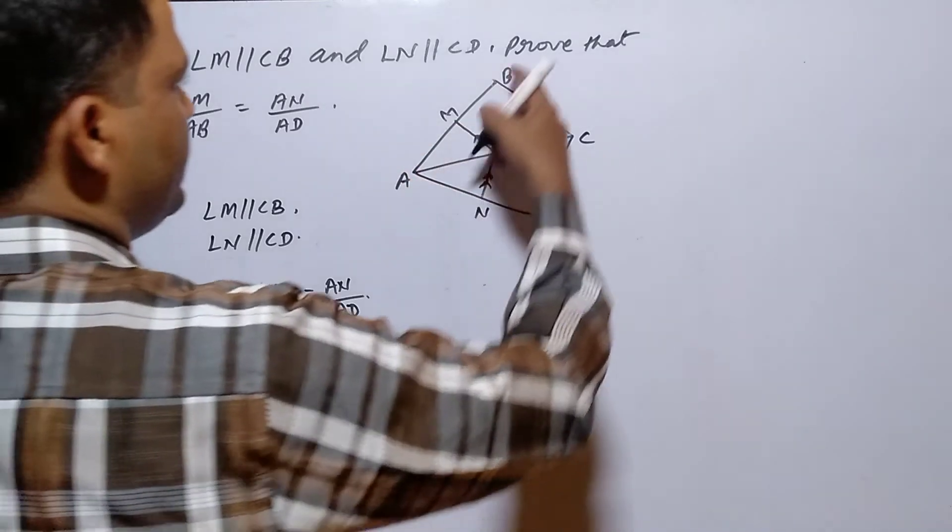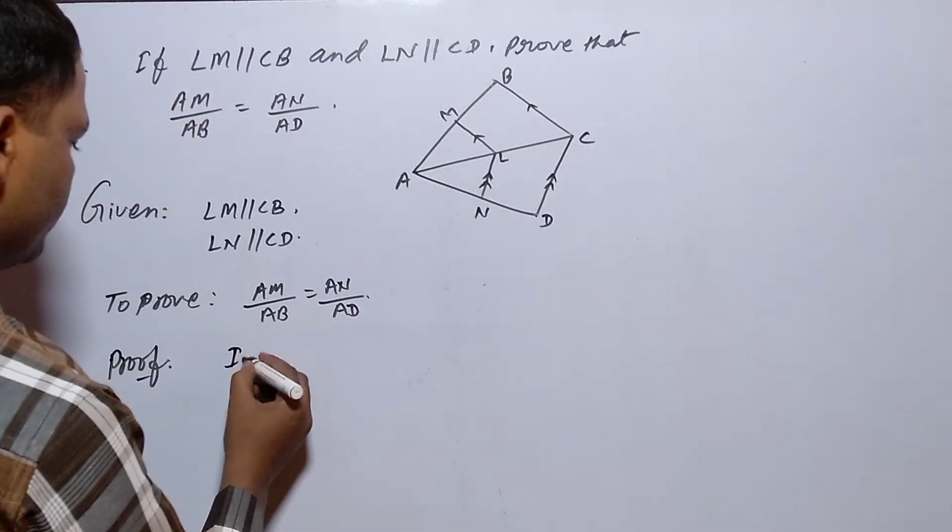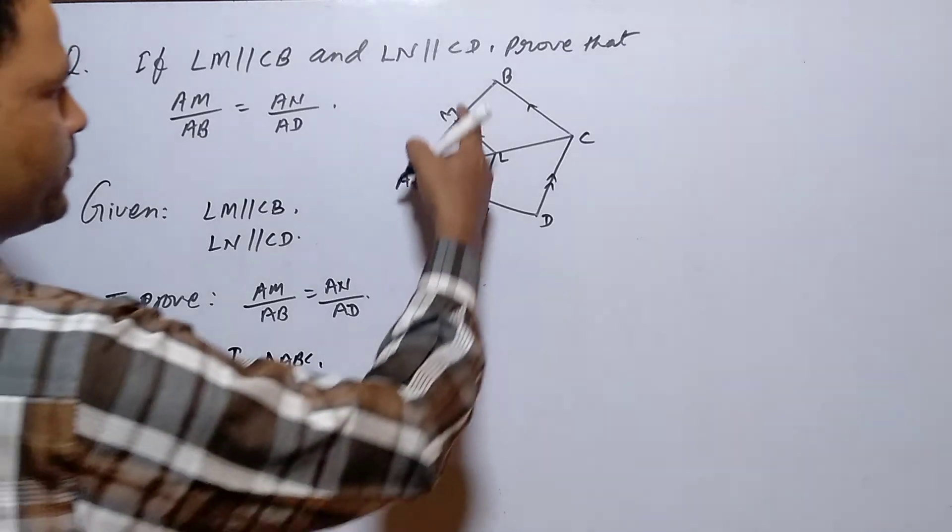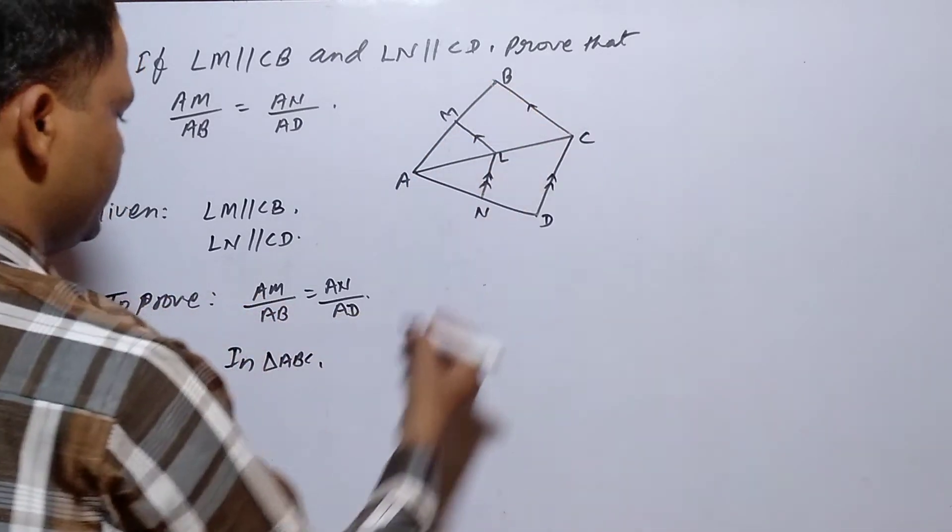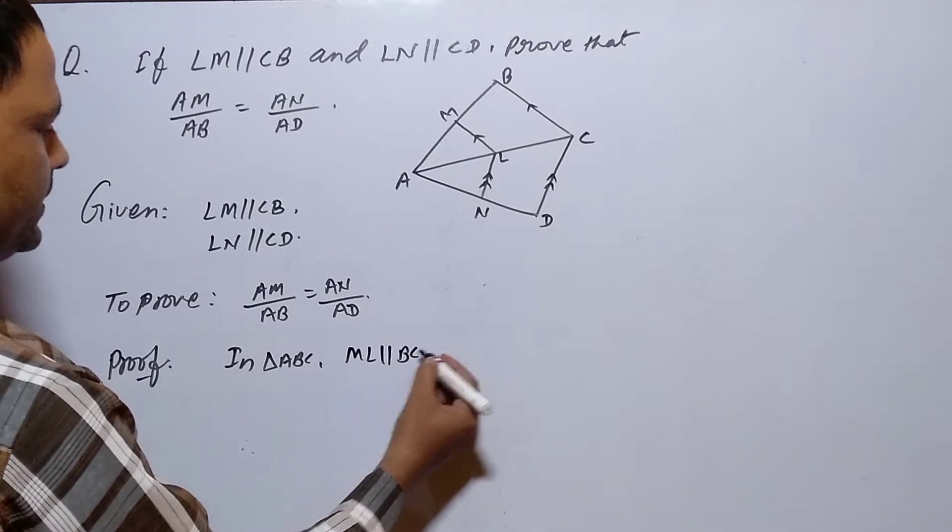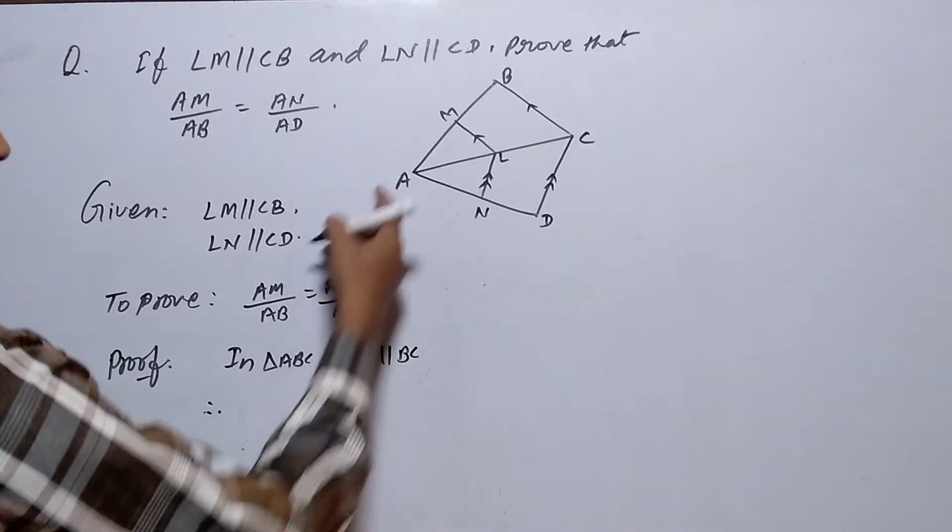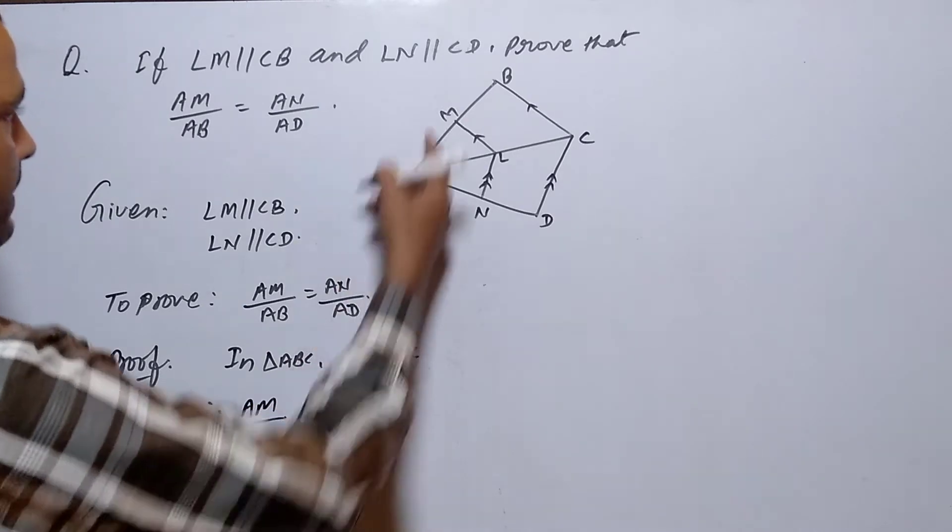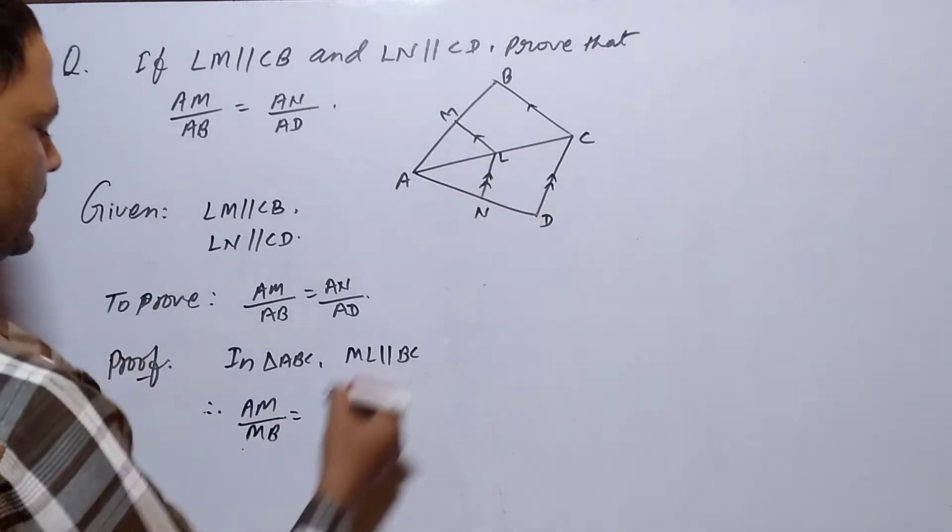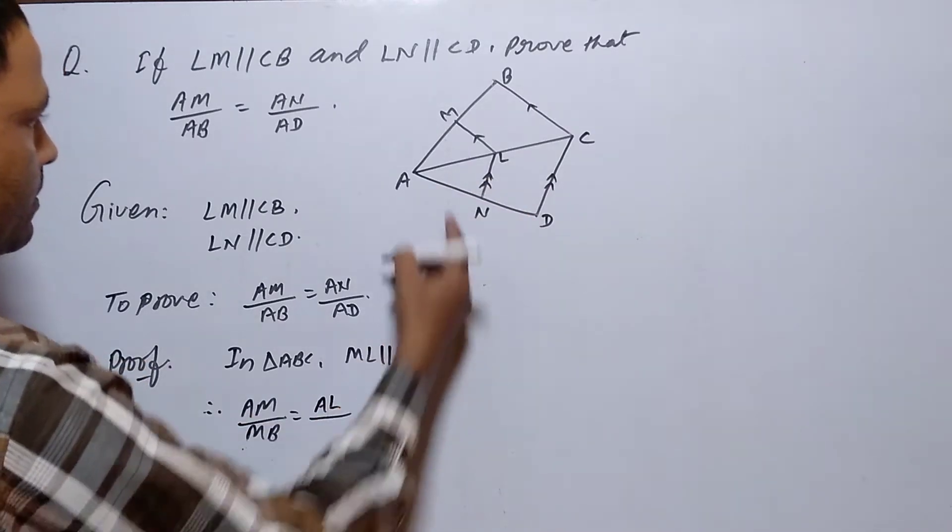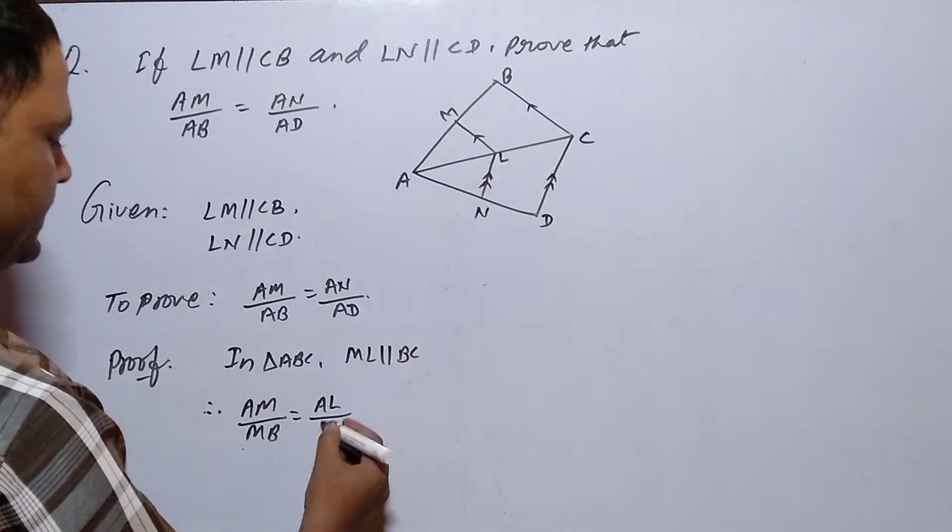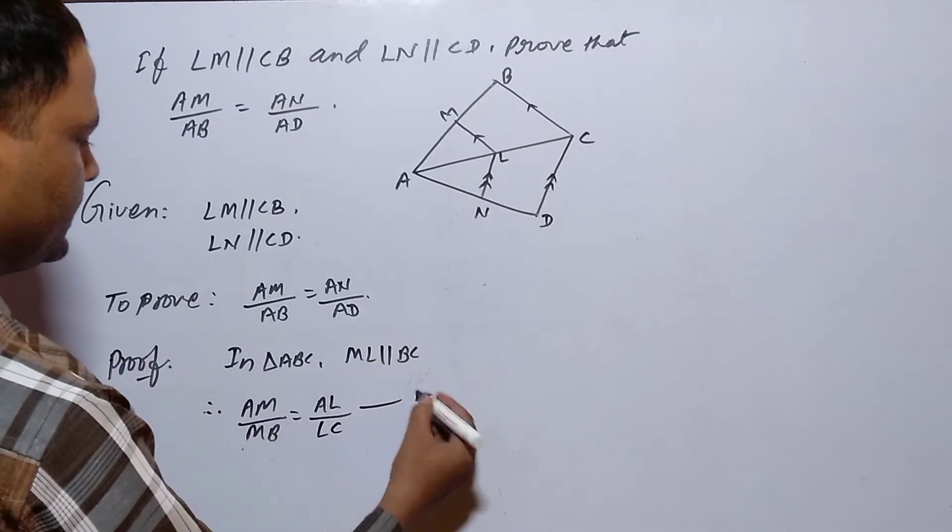In Triangle ABC, ML is parallel to BC. Therefore, AM by MB is equal to AL by LC. This equation is equation 1.